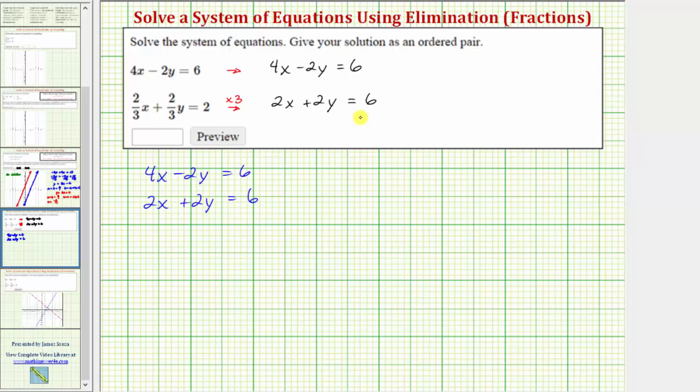When solving a system of equations by elimination or addition, we normally have to multiply one or both equations by a constant to make either the x terms or y terms opposites. Notice how now the y terms are opposites, and therefore we can add these two equations together, and the y terms will be eliminated. So let's go ahead and add the equations together.